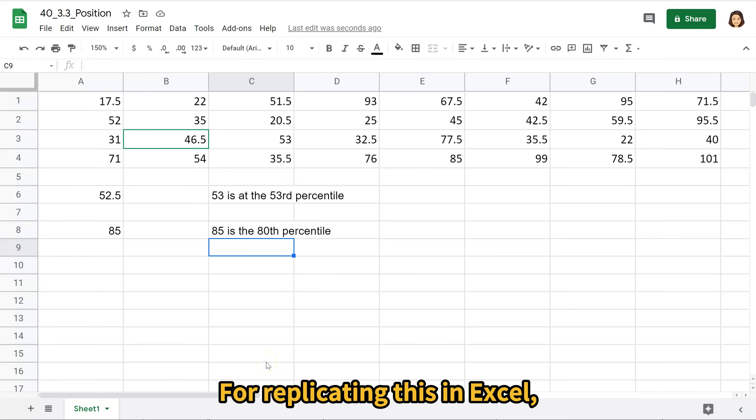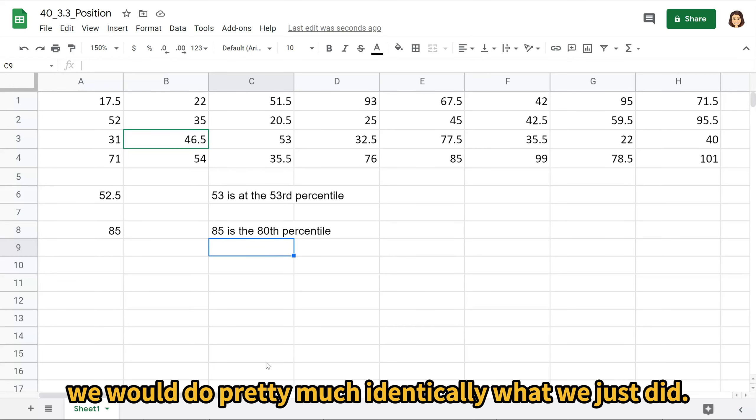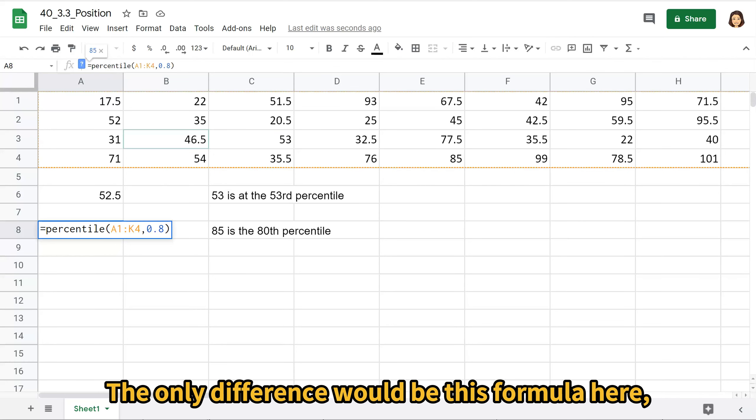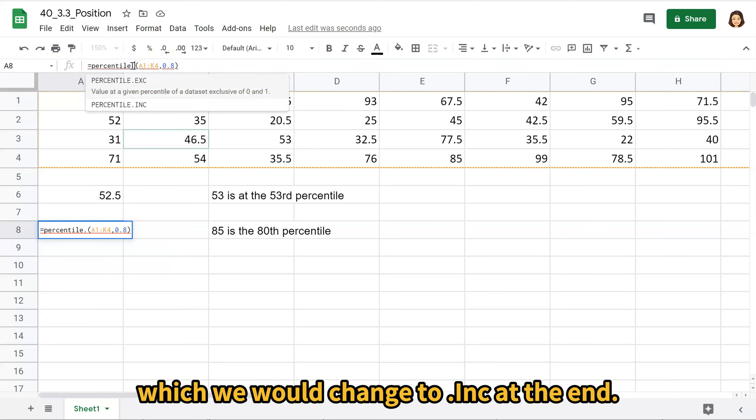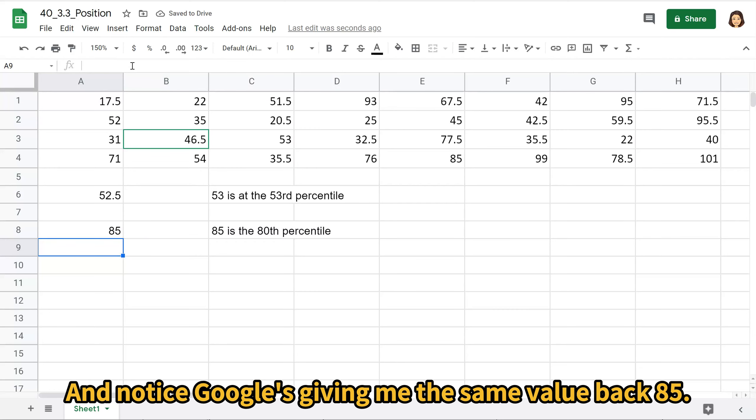For replicating this in Excel, we would do pretty much identically what we just did. The only difference would be this formula here, which we would change to .inc at the end. And notice Google's giving me the same value back, 85.